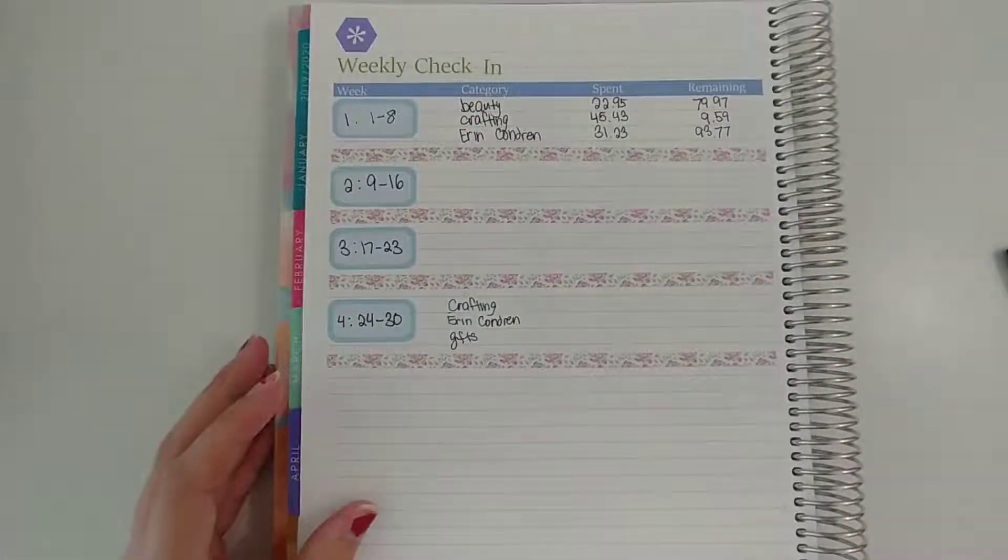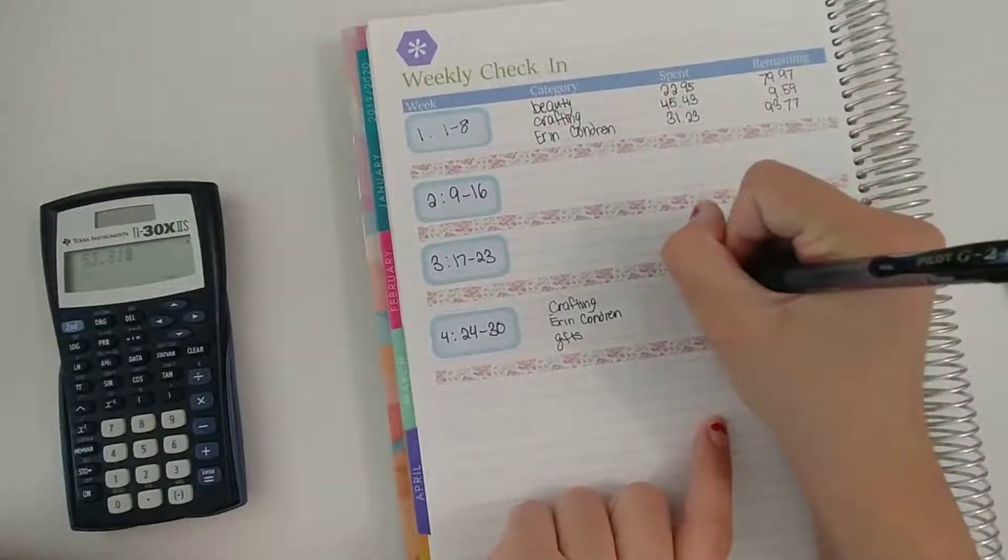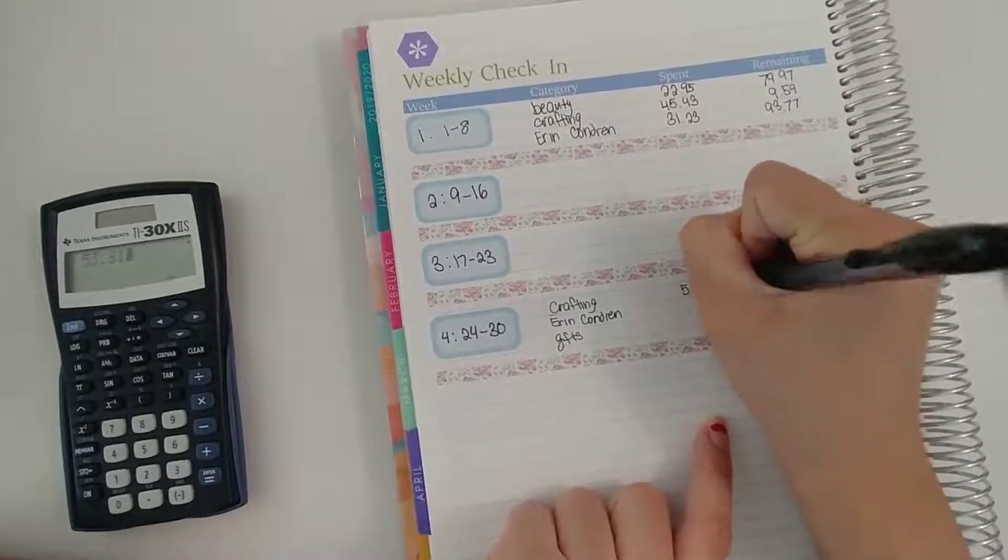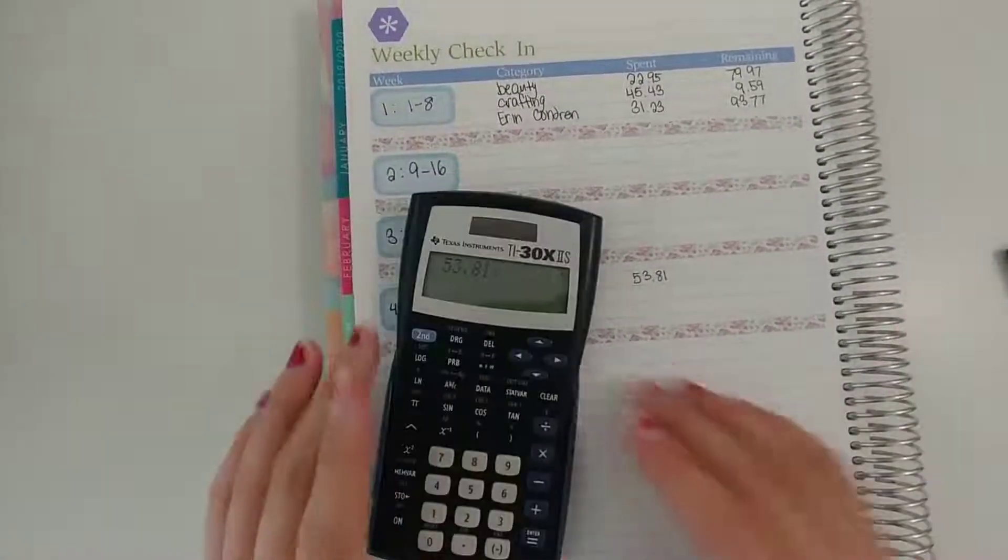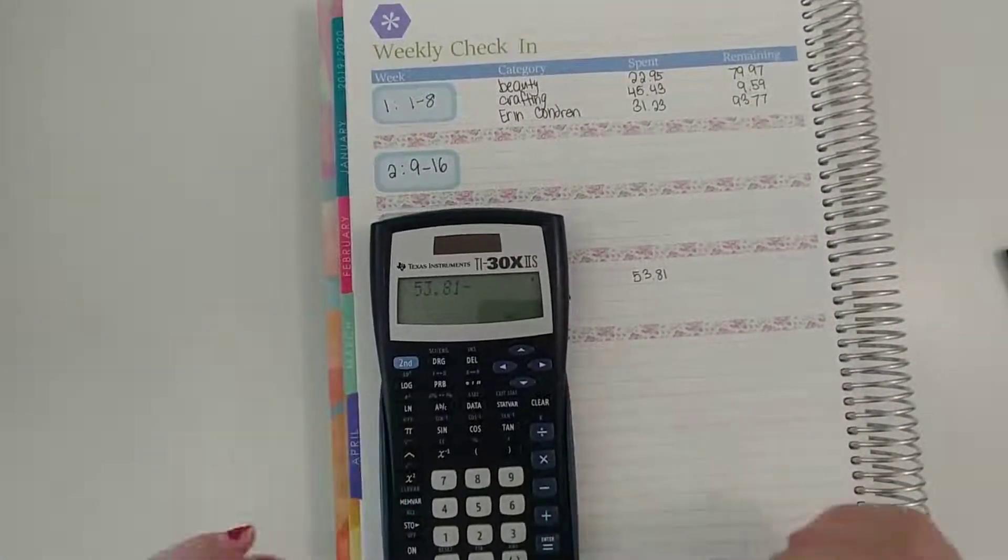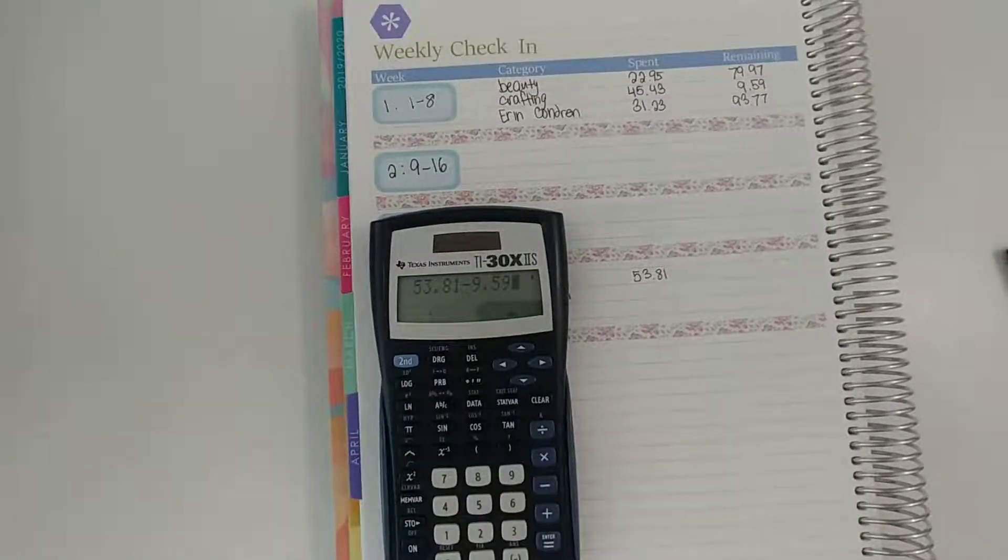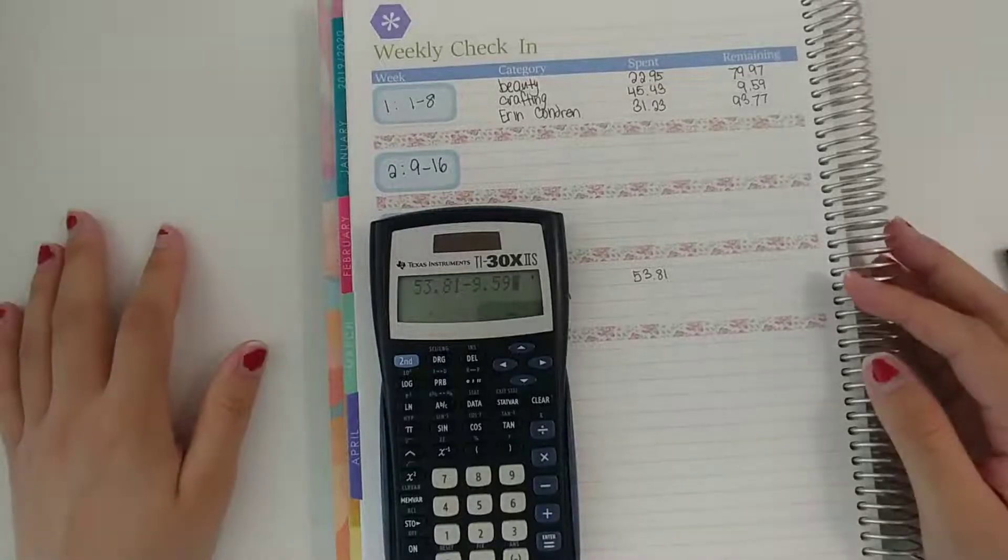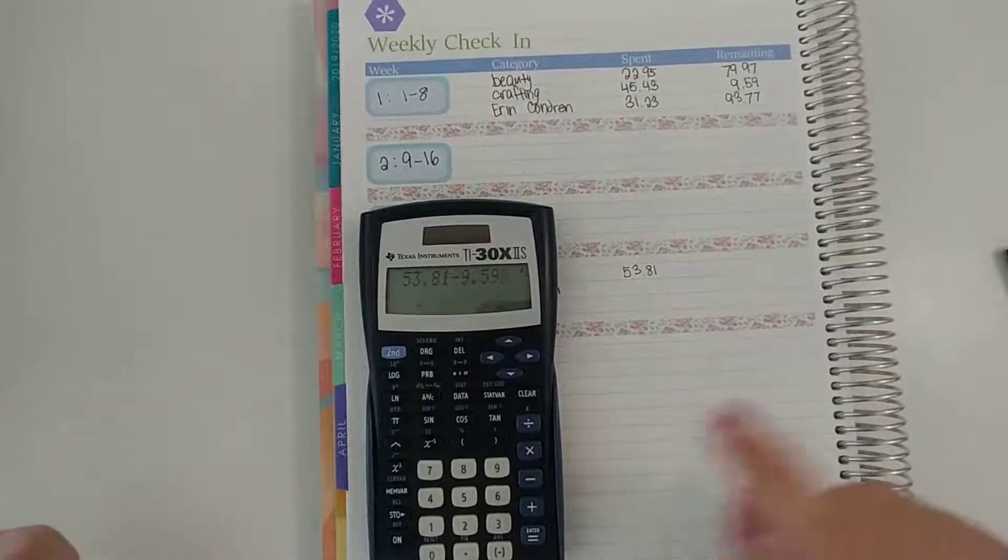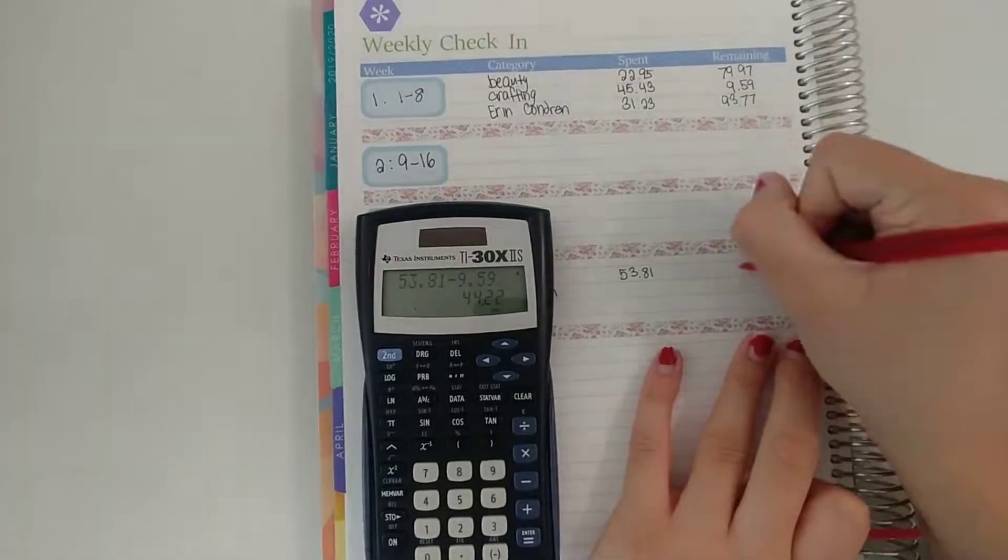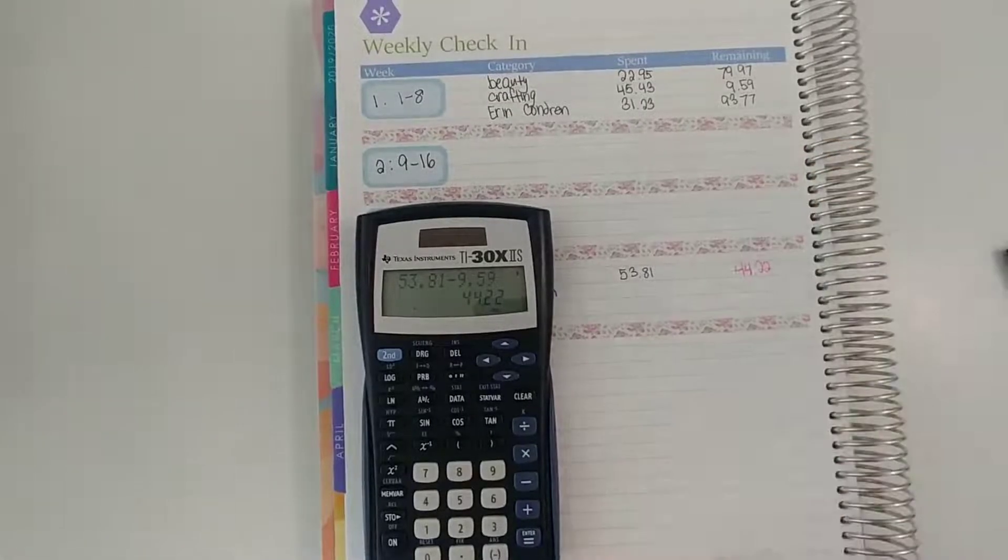And then in my weekly check-in I already have the crafting set up so I spent a total of $53.81. I know I went over budget in this category but Glam Planner had a really cute kit for Harry Potter and I needed a Harry Potter kit and I really liked that one so I picked it up along with a few other items. I will be doing a haul of that as soon as I get them in. So I went over in this category by $44.22.